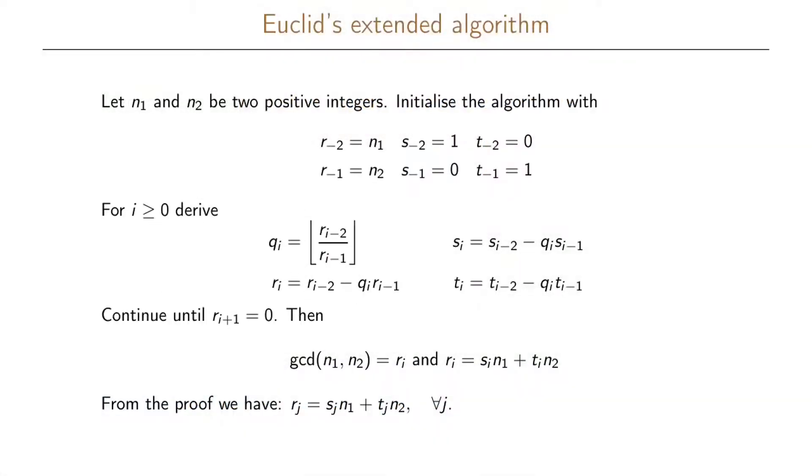Euclid's extended algorithm is a way to compute Bézout's identity without first doing Euclid's algorithm and then going backwards as we did previously. In Euclid's extended algorithm we just make one pass similar to Euclid's algorithm, and then in the end we will find the numbers s and t such that we have the greatest common divisor is equal to s times n1 plus t times n2. So this algorithm goes as follows.